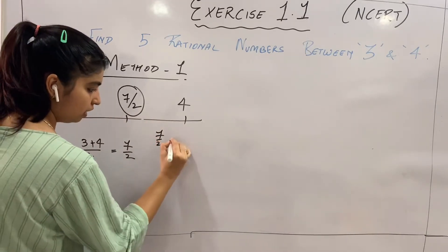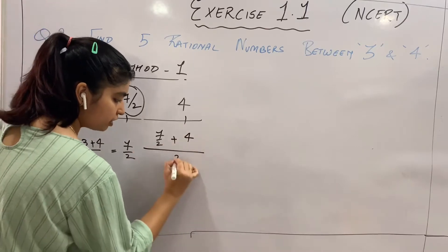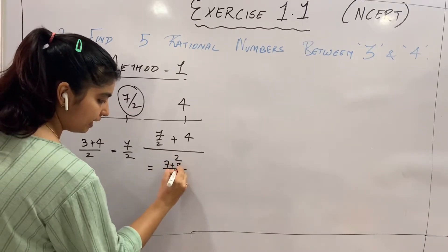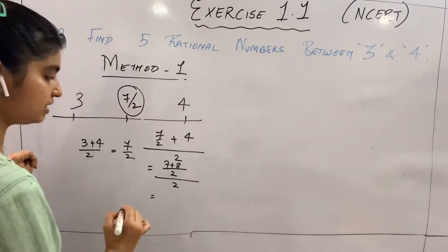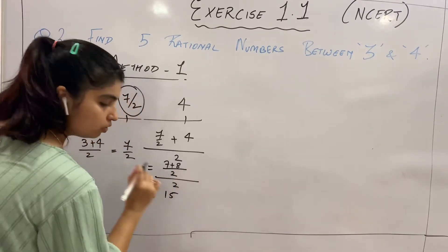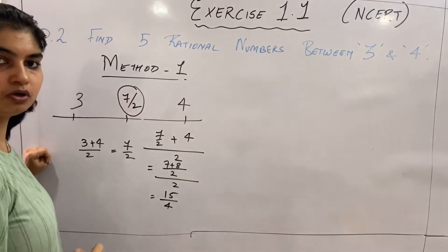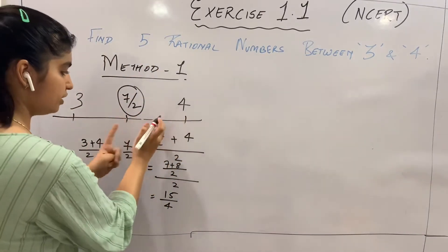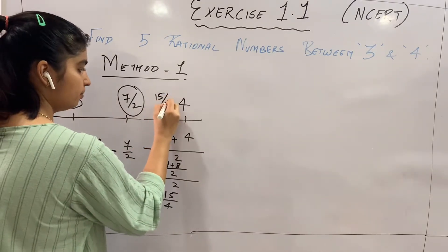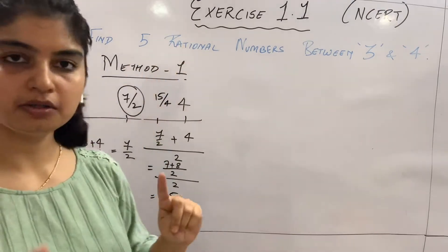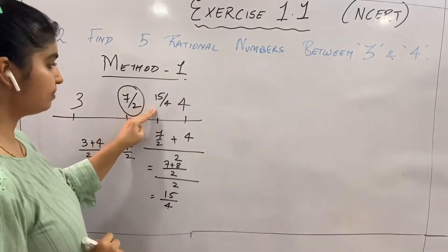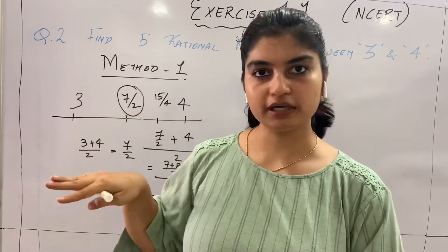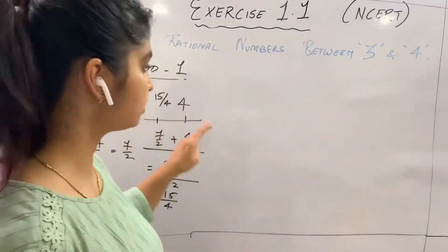Next, take the average of 7/2 and 4: (7/2 + 4) / 2. Taking LCM of 2: (7 + 8) / 2 = 15/2, divided by 2 gives 15/4. This is the average of 7/2 and 4, located between them on the number line. So 15/4 is another rational number between 3 and 4. It satisfies the p by q condition with both p and q as integers and q not zero.